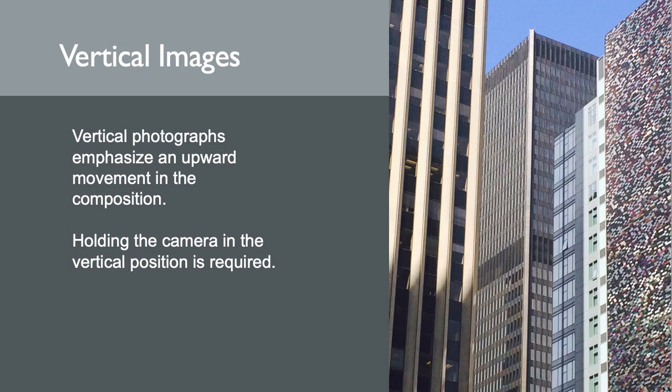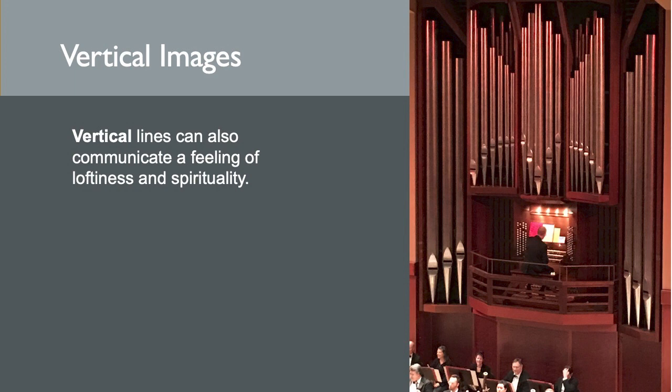Vertical photos emphasize an upward movement in the composition, sometimes portraying a feeling of dominance. Erect lines seem to extend upwards beyond human reach towards the sky. They are often found in public architecture, from cathedrals to corporate headquarters. Holding the camera in the vertical position is required. Vertical lines can communicate a feeling of loftiness and spirituality. Extended vertical perpendicular lines suggest an overpowering grandeur, beyond ordinary human measure.